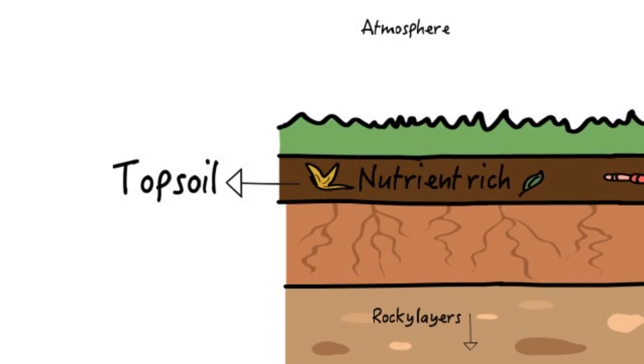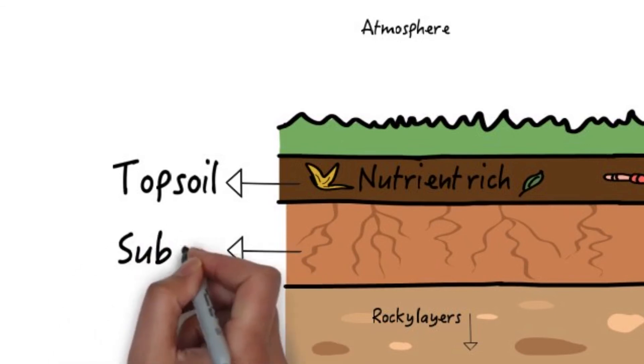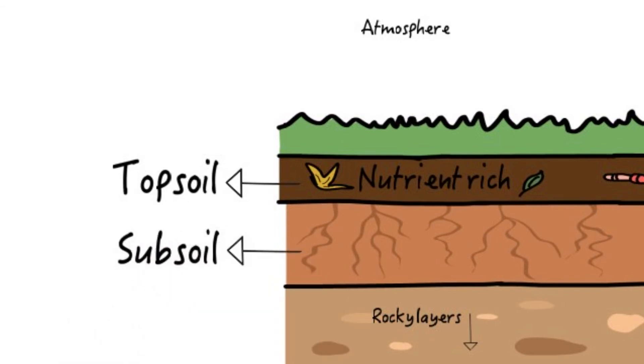The second layer, the low topsoil, is called subsoil. Subsoil mainly consists of larger rocks, and water from precipitations is stored here.